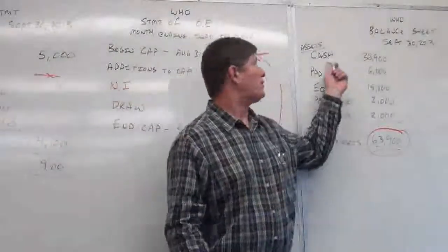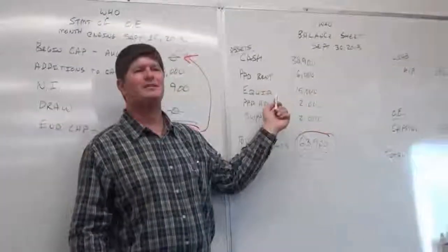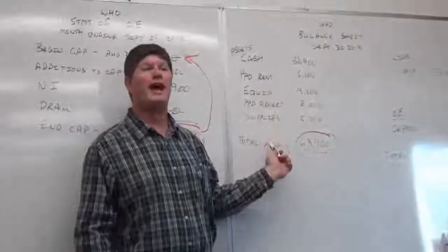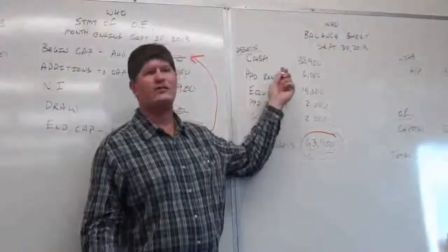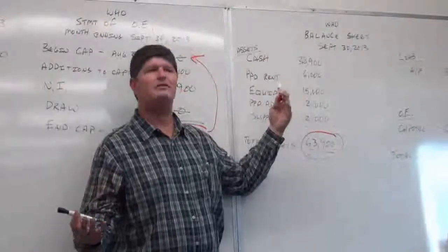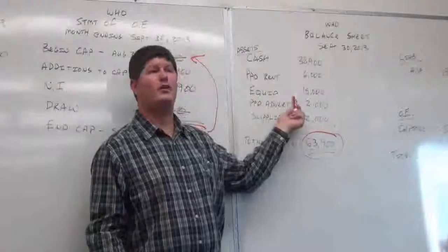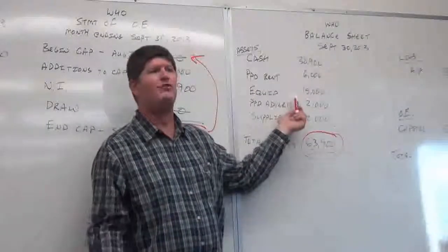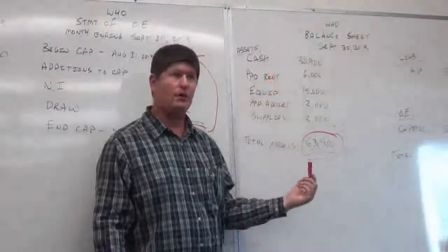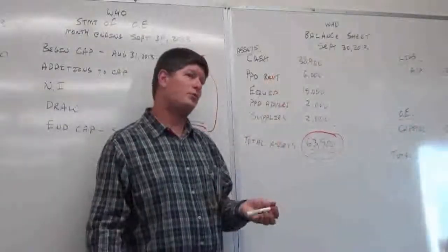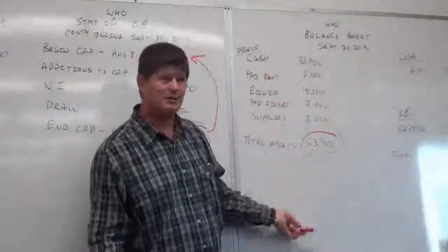Cash is very important, so I list cash first, and then I list my assets in the order that they can be turned into cash. If I have accounts receivable, I'm going to collect that in 30 days — that's pretty close to cash. But my equipment, I would have to go out and sell that; that may take four, five, six, eight months, so that gets listed further down. If I have a note receivable that they're going to pay me 10 years from now, that's going to get listed way down.